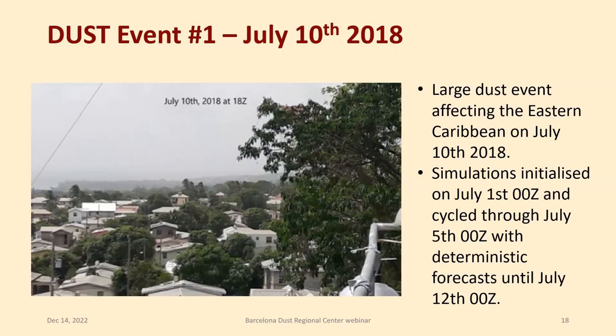We'll look at two dust events as examples. The first was July 10, 2018 — as you can see from the image taken from the CIMH rooftop, poor visibility indicates a large amount of dust in the atmosphere. We had a large dust event affecting the Eastern Caribbean around July 10, 2018. We initialized simulations on July 1st 0Z and cycled them through July 5th 0Z, with the deterministic forecast running until July 12th 0Z.